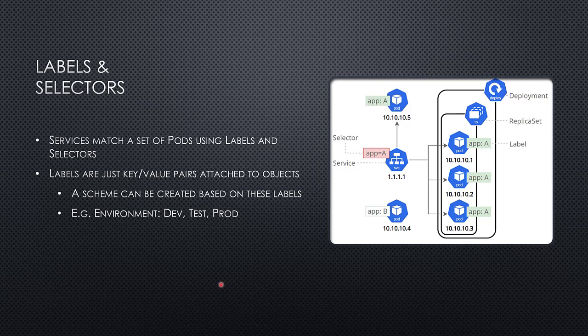The next thing we need to discuss is labels and selectors. Labels allow different objects in Kubernetes to reference other objects as either dependencies or whatever else. They're simply key-value pairs and typically you have to come up with your own scheme. One typical one is environment — you would say environment dev, test, or prod. Other common labels are app — you can see in this example you have app A and app B. If we say we want to work with any label with app equals A, that's a powerful way for us to target our commands to just a part of our application. App version is another common label.